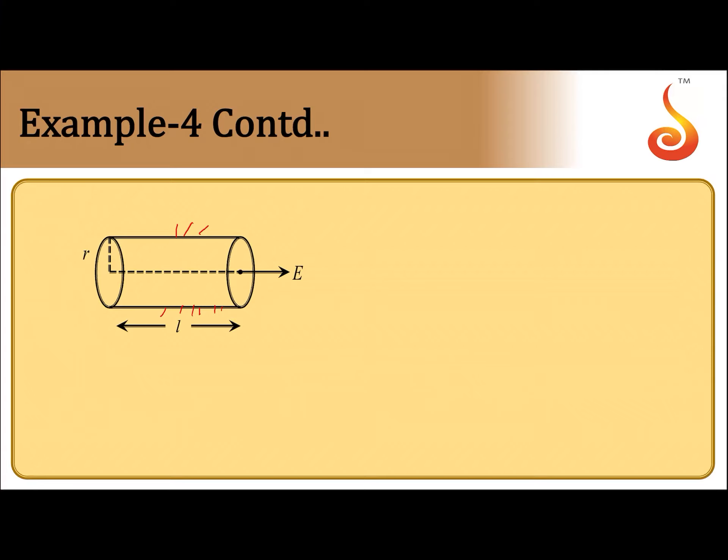Clearly you can notice the electric field is along the axis of the cylinder and the curved surface is perpendicular to this. Now, we know that flux through any surface φ equals E⋅A.